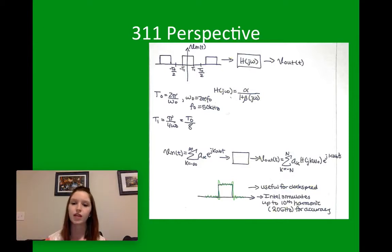And it goes into our system when you get Vout, it is from k equals negative n to n, times a(k), H(jω), times k, times the exponential of j k omega t. And this is useful for clock speed, and for having better accuracy in testing of electronics.